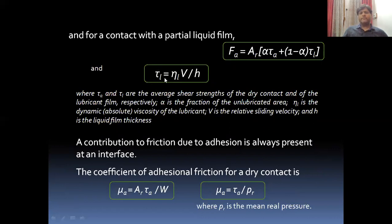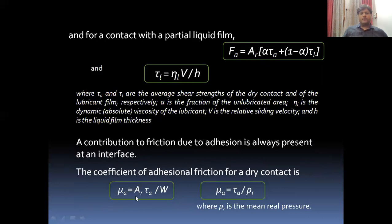The shear stress of the lubricating film can be calculated using: ηL × V / H, where ηL is the absolute viscosity of the lubricant, V is the relative sliding velocity, and H is the liquid film thickness. By this formula, if there is a liquid film between two surfaces, you can calculate the average frictional force. The coefficient of adhesive friction in dry contact is given by: μA = AR·τA / W, or equivalently μA = τA / PR, where PR is the mean real pressure.